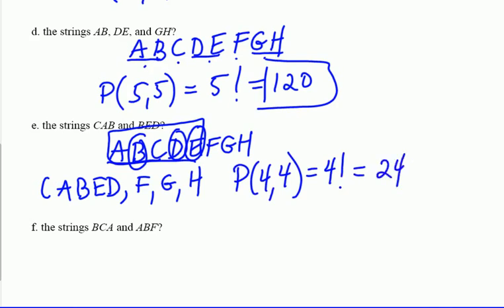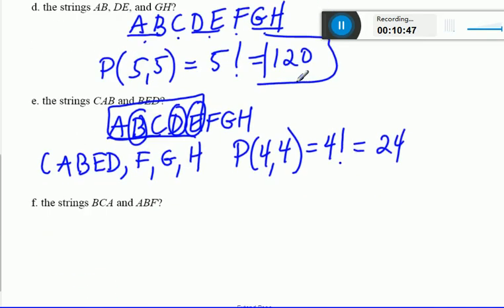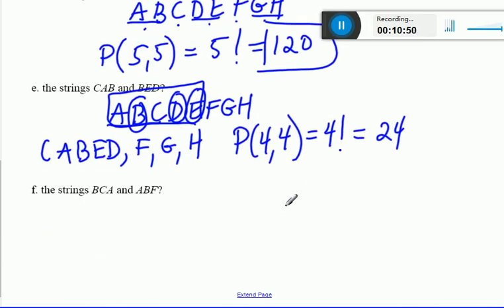Alright, the strings BCA and ABF. So let's look at this: BCA, ABF. Now that's not gonna work. And here's why. See how I have B and B again right here? B can't be in two places at once, so that's not a substring.